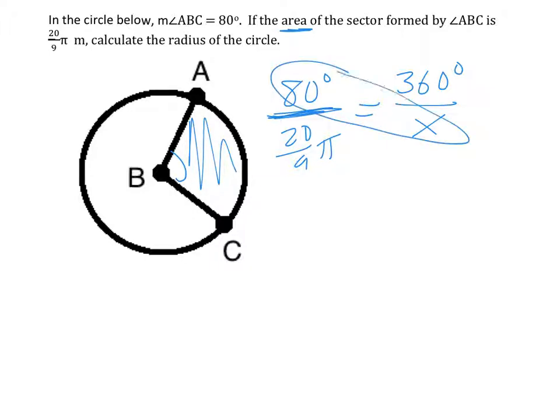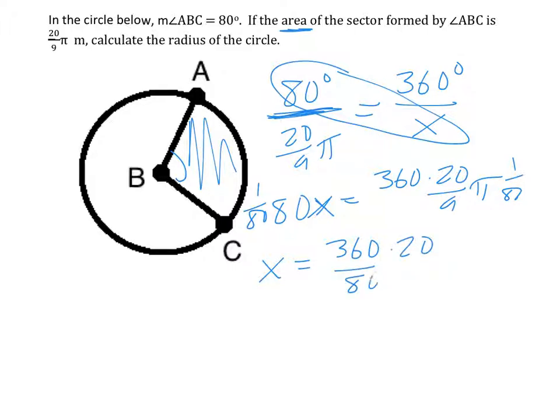So we cross-multiply. 80 times x is 80x. 360 times this will be 360 times 20 over 9 pi. And I want to solve for x. So I would divide each side by 80 or multiply by 1 over 80 if you prefer. So I get x equals 360 times 20 over 80 times 9 pi.